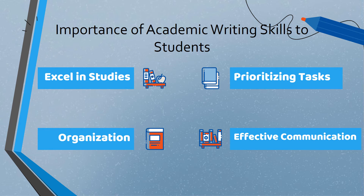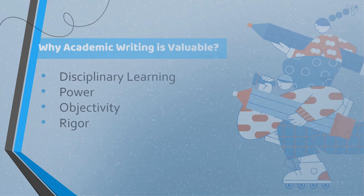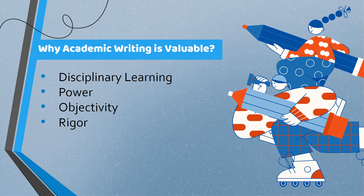Prioritizing tasks: time management skills help students prioritize their tasks. Organization: academic writing skills help students present their ideas logically and rationally, following a properly organized structure. Effective communication: academic writing skills improve written communication, helping writers convey their purpose and perspectives without causing misunderstandings.